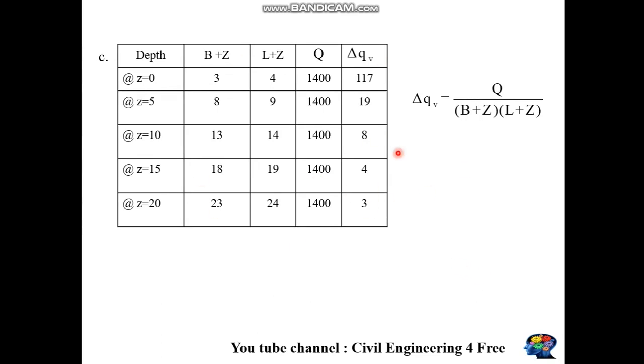Part (c): Finally, we'll calculate vertical stress due to the footing using the formula. Q is the load (1400 kN), and the area is obtained by multiplying (B+Z) × (L+Z).